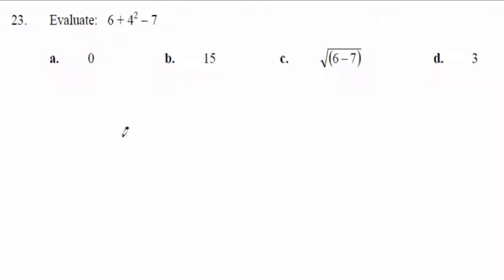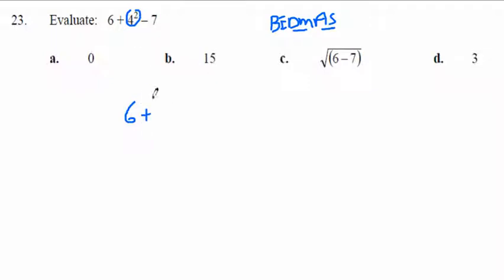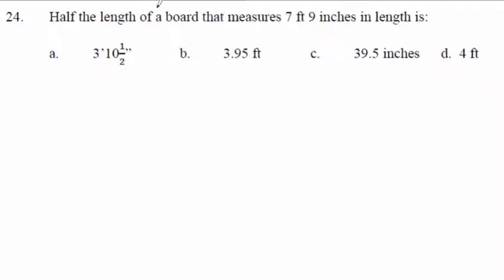6 plus 4 squared minus 7 — use BEDMAS. Do parentheses or brackets first, then exponents, then multiply and divide, then add and subtract left to right. There's an exponent: 4 squared is 16. So 6 plus 16 minus 7 equals 22 minus 7, and the answer is 15.